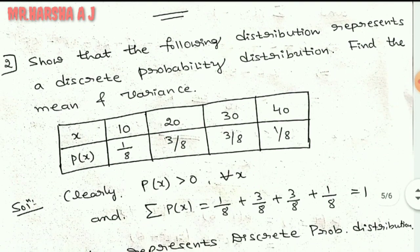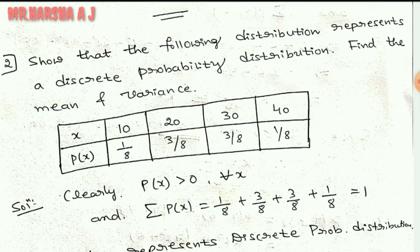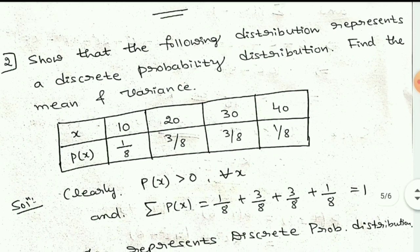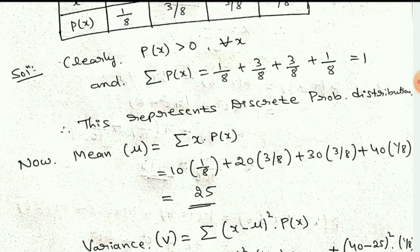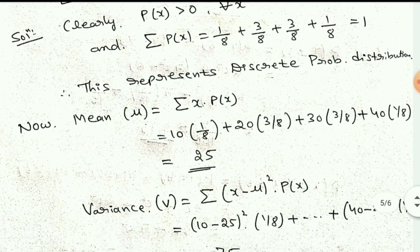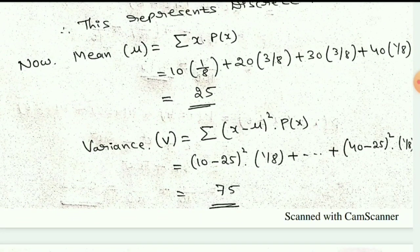Now the second problem: show that the following distribution represents a discrete probability distribution and find its mean and variance. They have already given the table. To show it is discrete, check two conditions: clearly all values in p(x) are greater than 0. Adding: 1/8 + 3/8 + 3/8 + 1/8 = 1. Both conditions satisfied — this is a discrete probability distribution. Mean = Σ x · p(x) = 2.5. Variance = Σ(x − μ)² · p(x) = 0.75.